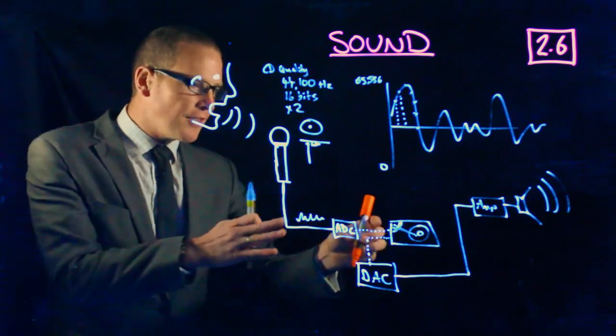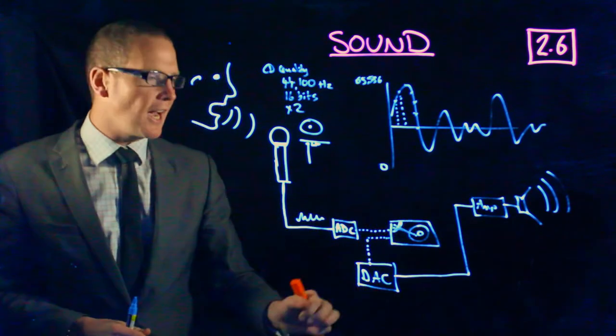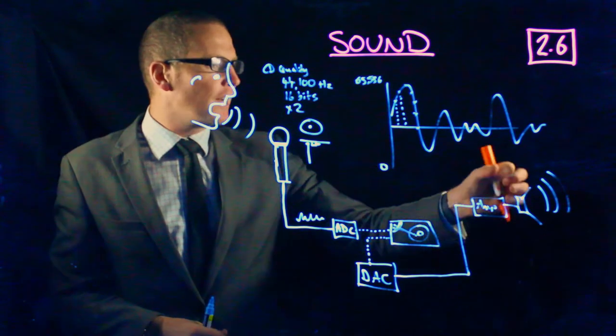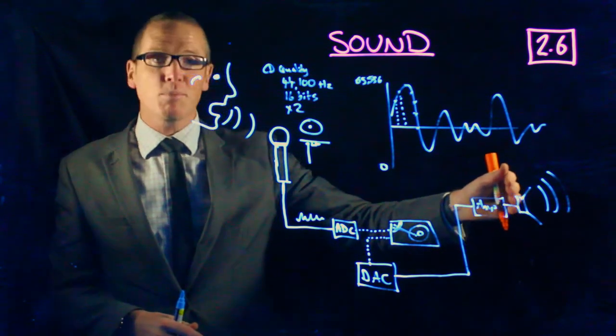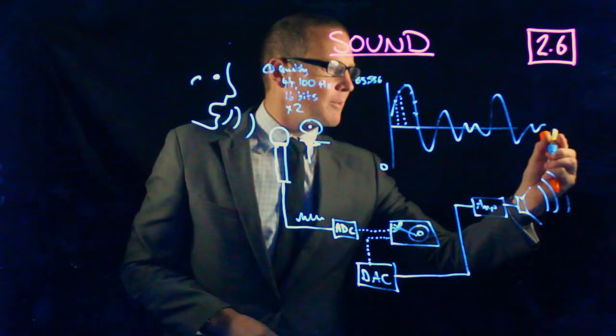...sound waves. So you've gone from sound waves through a microphone, your analog signal into an ADC, then into storage. It can be retrieved through a DAC, amplified, and then that loudspeaker can move air and create sound waves for a person to hear at the other end.